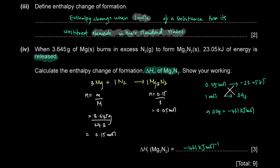The enthalpy change of formation is the enthalpy change per mole of magnesium nitride being made. Take the energy change and divide by the number of moles: −23.05 ÷ 0.05 = −461 kJ/mol.